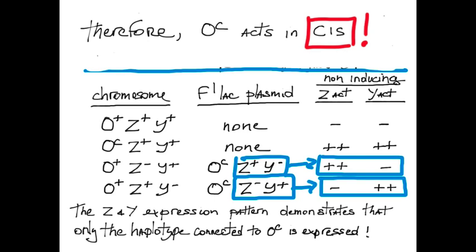These days, we can easily distinguish allelic contribution to expression by sequencing and identifying single nucleotide polymorphisms. But that would be another story.